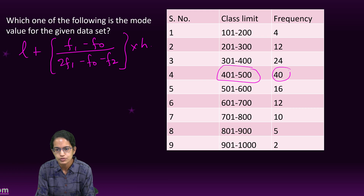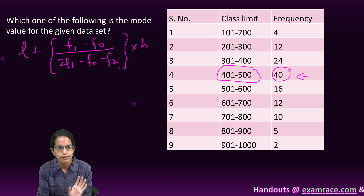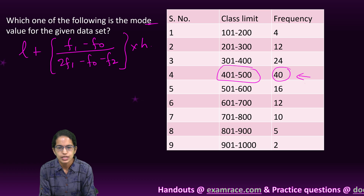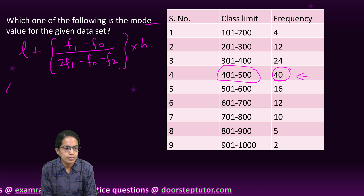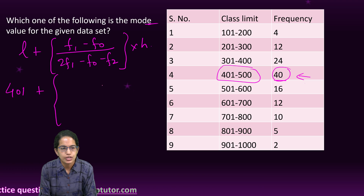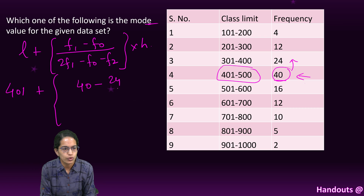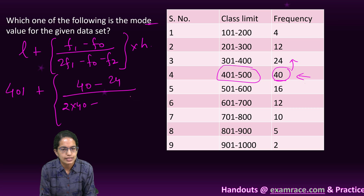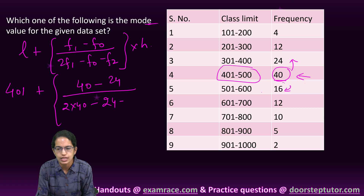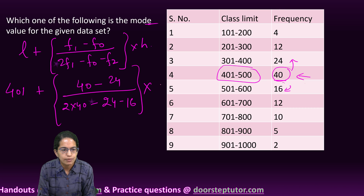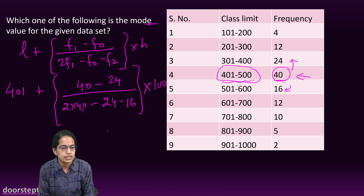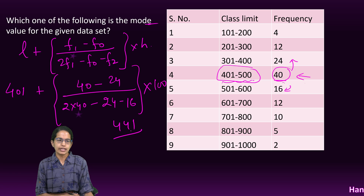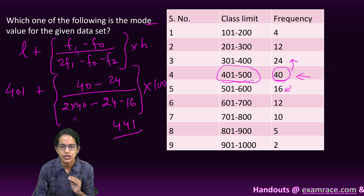The modal class is 401-500 because it has the highest frequency of 40. So the lower limit is 401. Applying the formula: 401 + [(40−24) ÷ (2×40 − 24 − 16)] × 100. Since this is an inclusive series, the class interval is 100. Solving this gives 441 as the mode value for this data set.